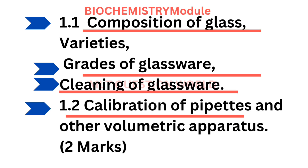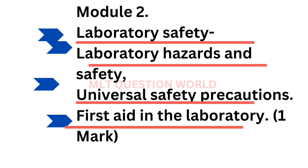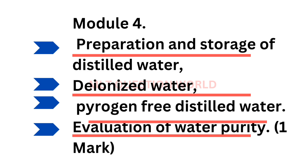Then the biochemistry module — composition of glass, its different varieties, grades of glass wares, cleaning of glass wares, calibration of pipettes, etc. Module 2 includes laboratory safety, laboratory hazards and safety, universal safety precautions, and first aid in the laboratory. Module 4: preparation and storage of distilled water, deionized water, pyrogen-free distilled water, and evaluation of water purity.